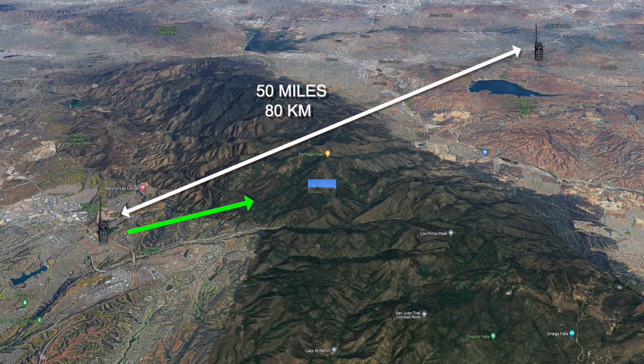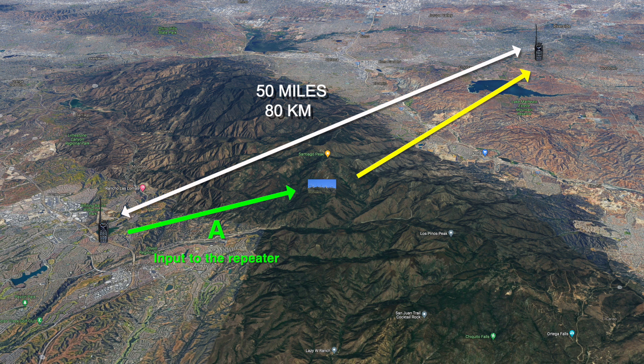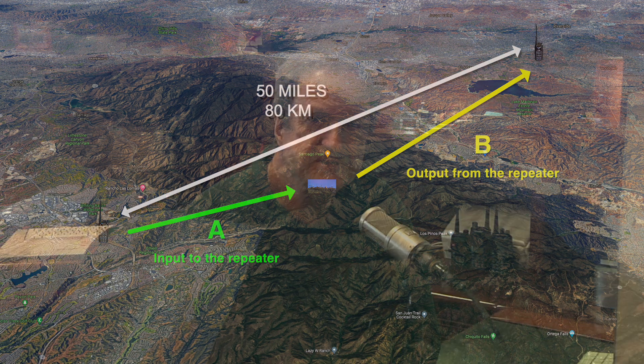When you talk on a repeater with your handheld or mobile radio, you transmit on a repeater input frequency. For our discussion, we'll call this frequency A. Your handheld radio transmits up to the repeater on A. At the same time, the repeater simultaneously retransmits your audio, sending it out on a new frequency, which we will call frequency B. This happens in real time, so it's coming into the repeater on A and going out on B. Your handheld radio transmits on frequency A and listens on frequency B. It does this receive and transmit frequency split automatically, but you have to program the radio properly to make it happen.